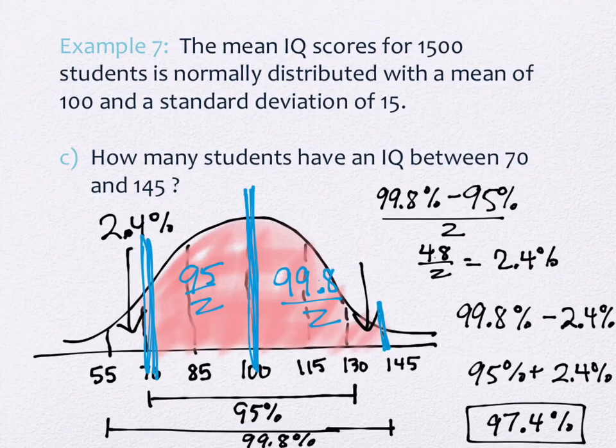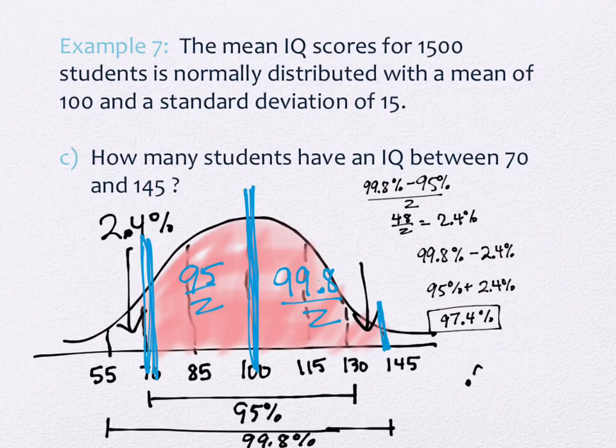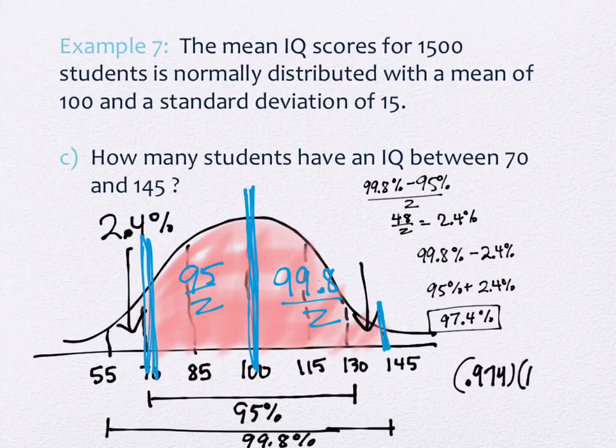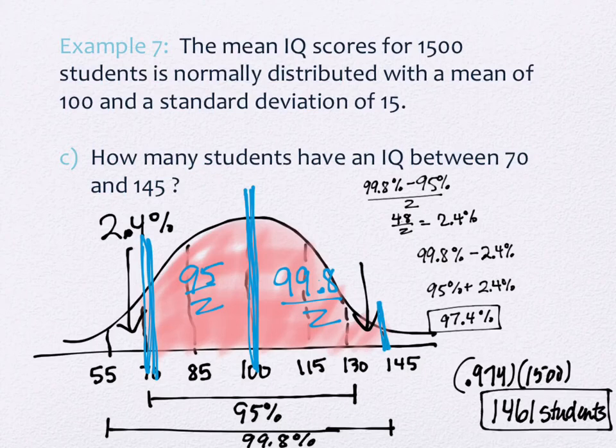Any questions on that? Thank you, yes I didn't get to that far. You're correct. We need to figure out how many students that is. So I have 97.4%, and we'll just for the sake of space go ahead and do the 0.974 times my 1,500 students. And that gives me 1,461 students. Okay, any questions?